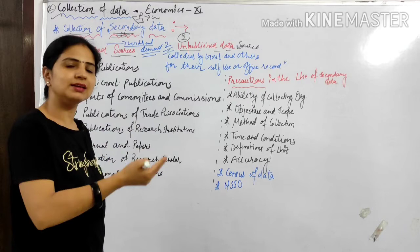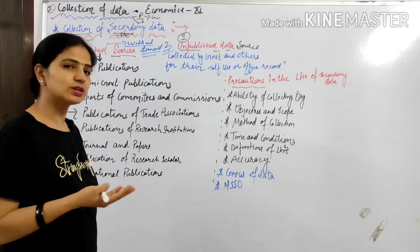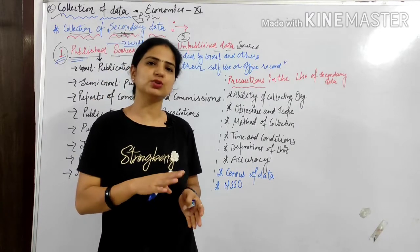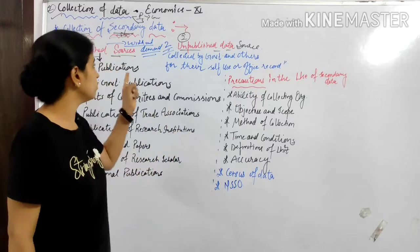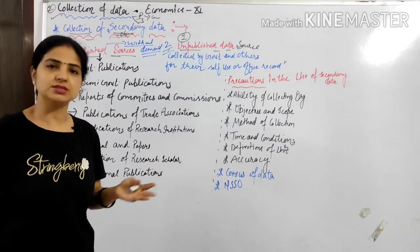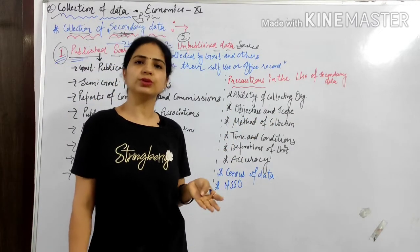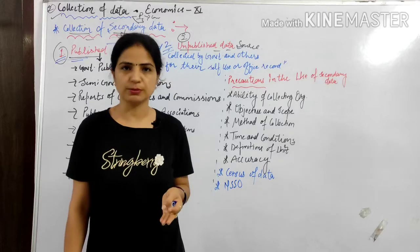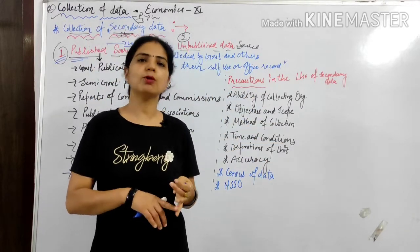Published data is data that is systematically collected and published through publications without requiring your demand. For example, newspapers — if it is published, you don't need to request it. Newspapers, magazines, journals, news, and social media are all examples of published data sources.